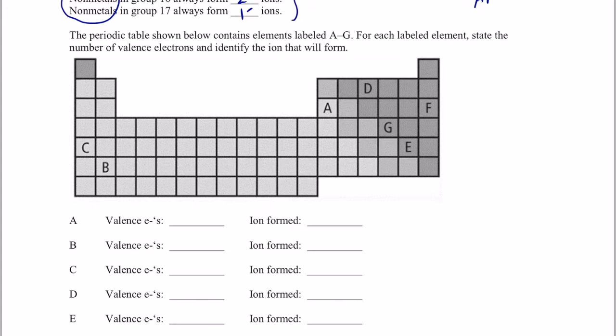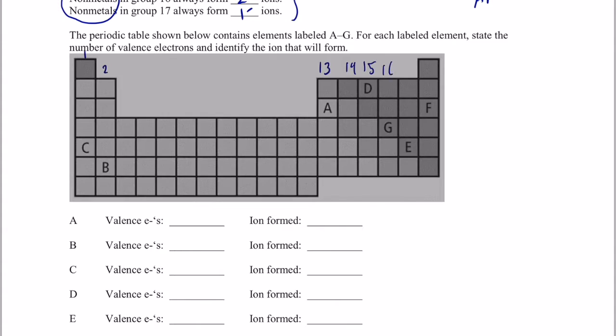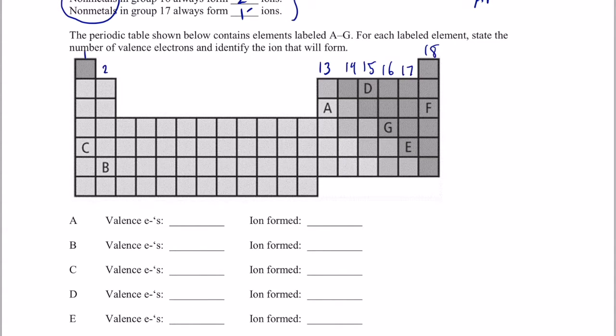All right. So let's review right now. Let's see if we can complete the questions that follow this periodic table below. So the periodic table shown below contains elements A through G. For each labeled element, state the number of valence electrons and identify the ion that will form. All right. So let's make this easy on ourselves. Let's go ahead and number the groups because that's going to help us figure out the valence electrons. This is group one, group two, and then of course we have 3 through 12 here, but there aren't any there. So we'll go 13, 14, 15, 16, 17, and 18. And as you recall, the last digit in the group number will tell you the number of valence electrons, except for the element helium right here.